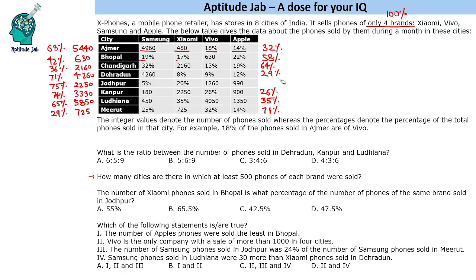The first question asks: what is the ratio between the number of phones sold in Dehradun, Kanpur, and Ludhiana? If we see the values, the first two values themselves are distinct, so let us not calculate for all three — we will just calculate for two of the cities. That is sufficient to answer the question.